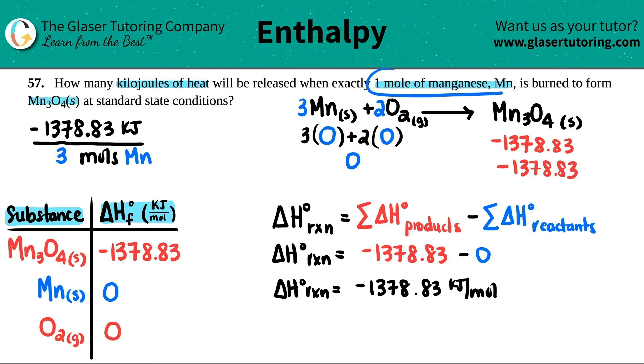Now they want for just one mole of manganese, so technically you have to cancel out the moles. If I just put the one mole here, the moles of Mn are going to cancel and you're just going to be left with kilojoules, which is heat. So all you had to do is basically just divide by three. So 1378.83 divided by three - I get 459.61, and that's kilojoules.